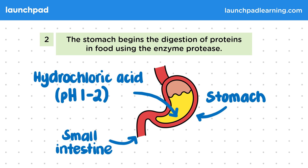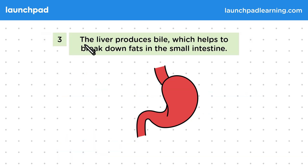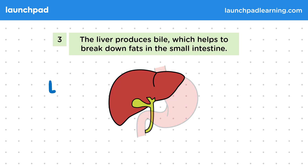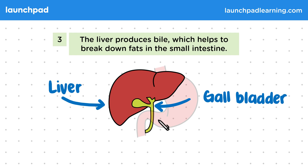The liver produces bile, which helps to break down fats in the small intestine. The liver is a large organ found to the right of the stomach. Food doesn't actually pass into the liver — it moves from the stomach to the small intestine. The gallbladder, attached to the liver, is where bile — a green liquid — is stored before it's released into the small intestine. Remember that bile isn't an enzyme, but it helps to break down fats.